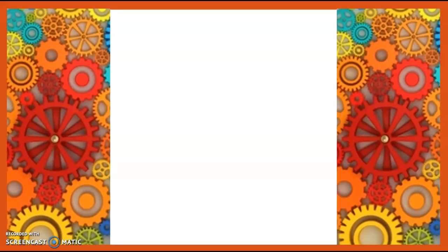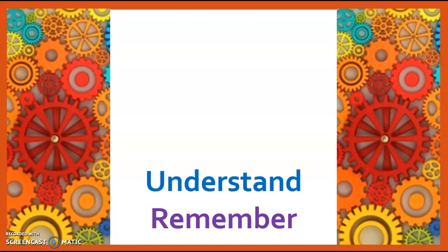At the base of Bloom's Taxonomy, we start with remembering material. At this point, we're not necessarily understanding it. We're simply remembering the details. But then we move up to understanding, where we have a basic comprehension of the material.